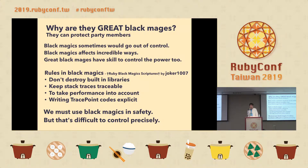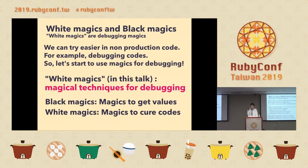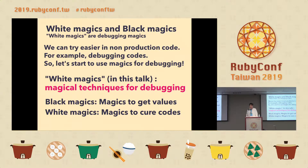There are rules for black mages from Joker-san: don't destroy built-in libraries, keep stack traces traceable, take performance into account, and write TracePoint code explicitly. We must use black magic safely, but it's difficult to control precisely. So we can try it more easily in non-production code — for example, debugging code. In this talk, white magic means magical techniques for debugging.